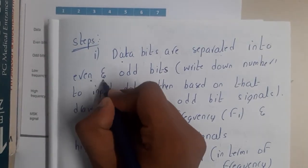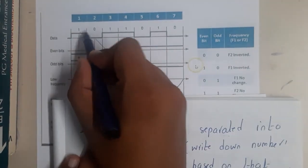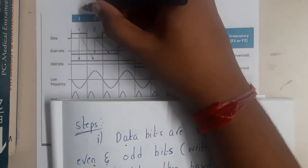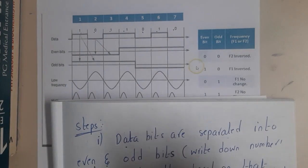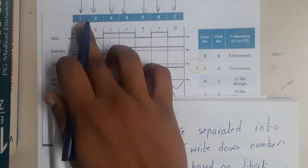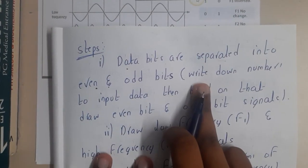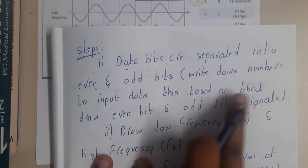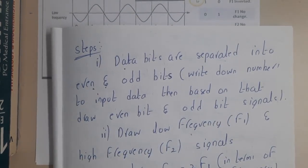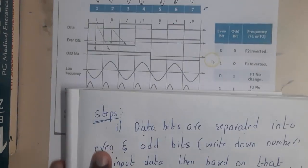Let us solve it step by step. The first step is: the data bits are represented as even and odd bits. Assume our data is 1, 0, 1, 1, 0, 1, 0. Once we have the data, we assign numbers — first bit is 1, second is 2, third is 3, and so on up to the seventh bit. Then, based on those numbers, we draw the even bit and odd bit signals. Most of us will be confused here about what the even signal and odd signal are.